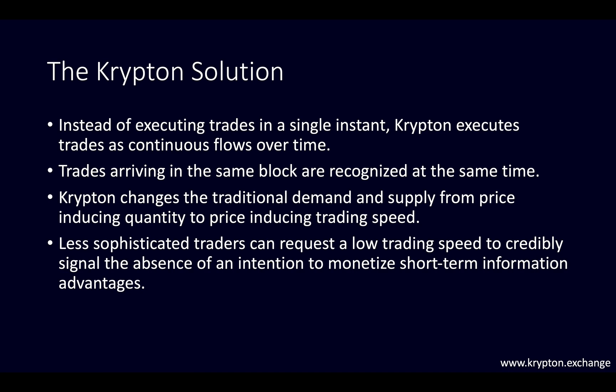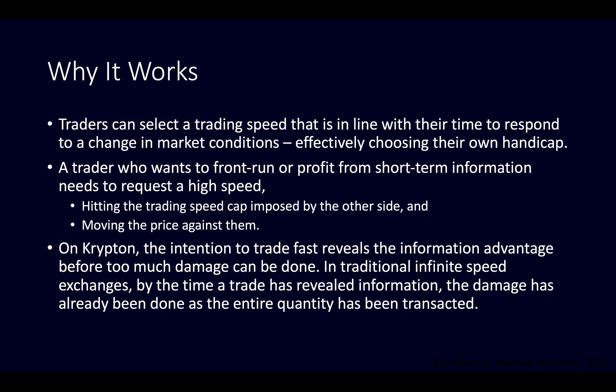Less sophisticated traders can simply request a low trading speed to credibly signal the absence of an intention to monetize short-term information advantages. On Krypton, traders can select a trading speed that is in line with their time to respond to a change in market conditions, effectively choosing their own handicap.